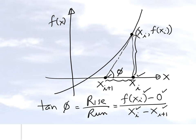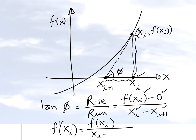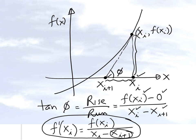The tangent of phi is nothing but the derivative of the function at x_i, because we are defining — or at least approximating — the slope of the function at that particular point. The unknown in this formula is x_{i+1}, because you start with the current estimate x_i, you know the value of the function at that point and the value of the derivative, and you want to find the next estimate of the root.